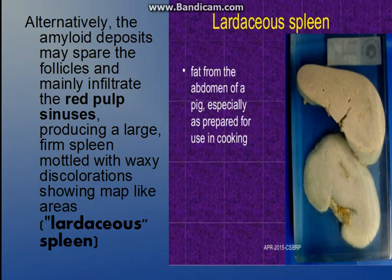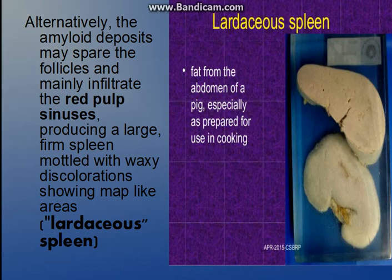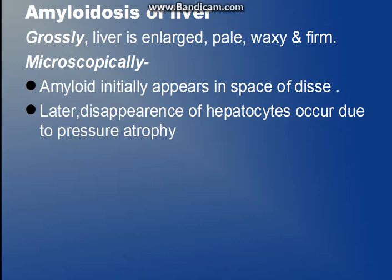Lard is the fat from the abdomen of the pig, used in some regions for cooking. In lardaceous spleen, amyloid deposits not in the splenic follicles but in the red pulp sinuses, producing a spleen that looks covered with waxy discoloration and a map-like involvement. This resembles lard, so it is known as lardaceous spleen.